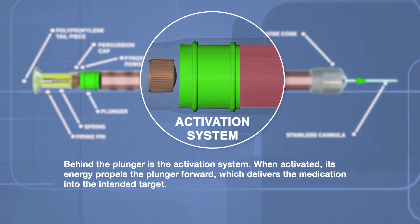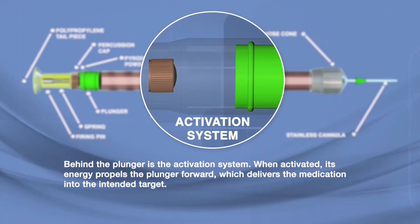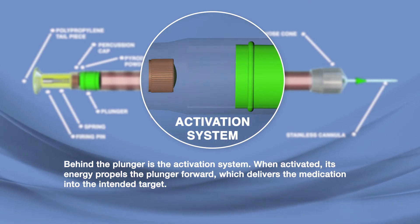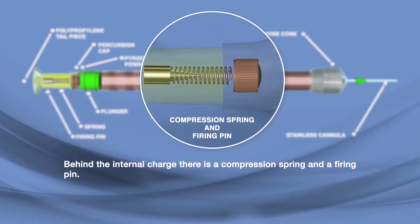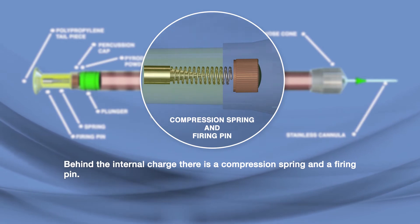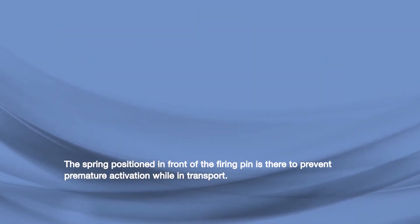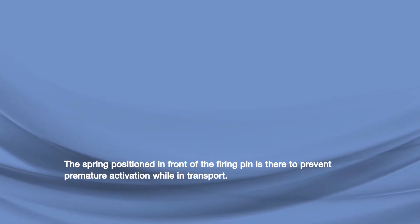When activated, its energy propels the plunger forward, which delivers the medication into the intended target. Behind the internal charge, there is a compression spring and a firing pin. The spring positioned in front of the firing pin is there to prevent premature activation while in transport.